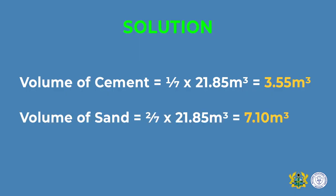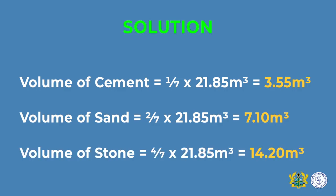The volume of sand is 2/7 × 21.85, where 2 is the ratio for sand and 7 is the total ratio. Then the volume of stone is 4/7 × 21.85, where 4 represents the ratio for stone and 7 the total ratio, giving 14.20 cubic meters.